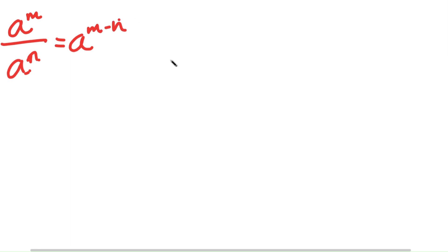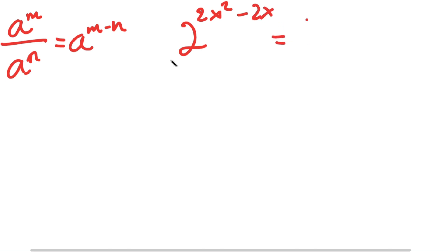Another property is that if I have a to the power of m over a to the power of n, this is equal to a to the power of m minus n. So 2 to the power of 2x squared over 2 to the power of 2x becomes 2 to the power of 2x squared minus 2x, and this is still equal to 2 to the power of 4.